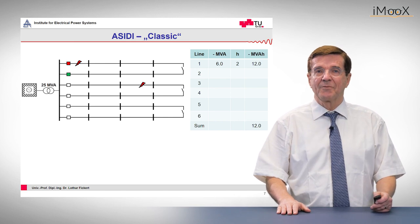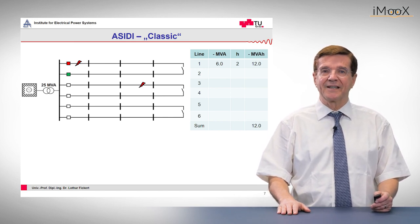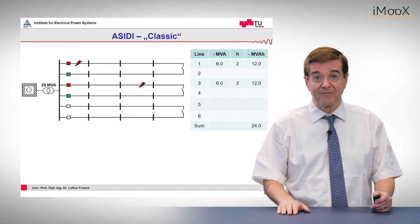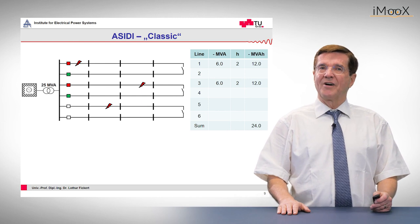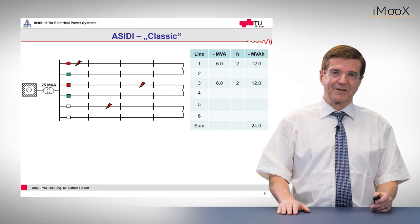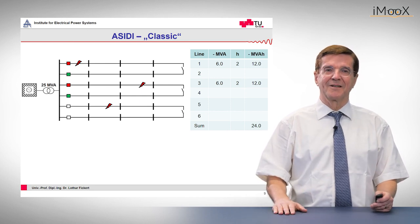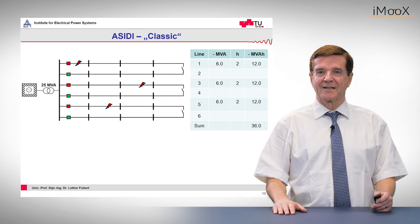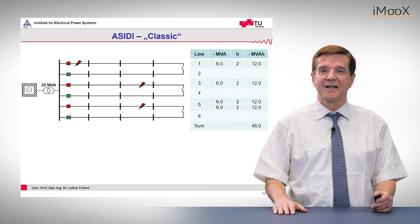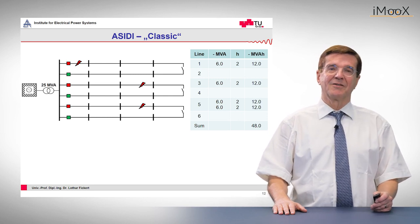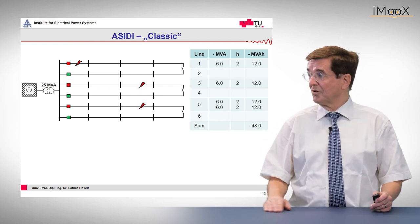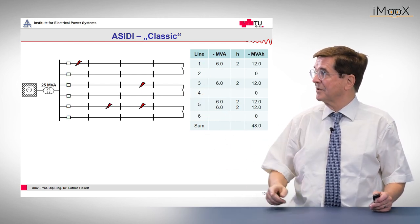The next fault occurs on feeder number three. Again the whole feeder is tripped out and we receive minus 12 MVA hours. Feeder number five in this network is less fortunate than the first ones — it experiences a first trip in the front half and loses minus 12 MVA hours, and sometime later a second fault occurs and again 12 MVA hours are lost. Altogether, this network has lost a sum of 48 MVA hours.